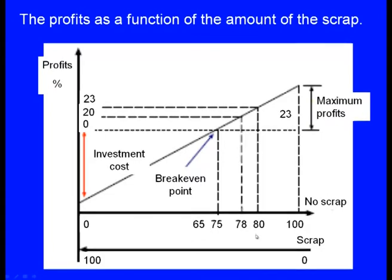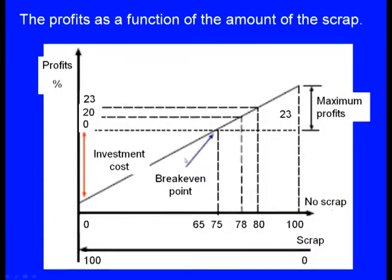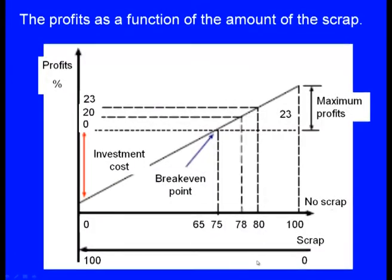Looking at the scrap curve: when scrap is about 75 percent, we can see a break-even point where profit is zero. As scrap decreases toward zero, profit increases. We get maximum profit when scrap is between 0 to 25 percent. Conversely, when scrap is very high, profit decreases significantly.